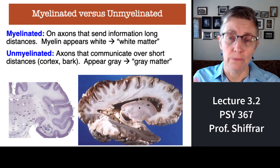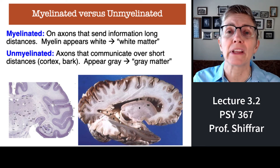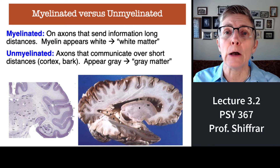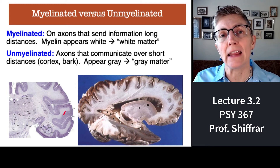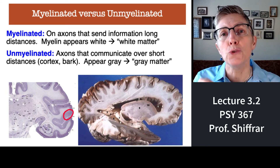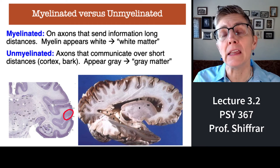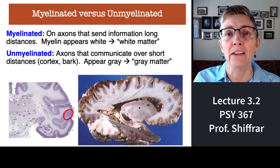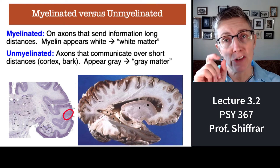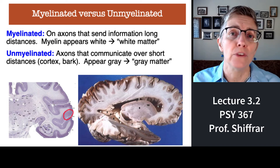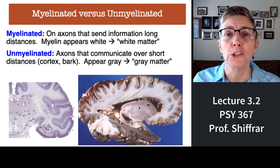When you look at this brain — the picture you're seeing now — regions that are gray are regions where there isn't myelin. Maybe it's a cell body, or maybe you're looking at neurons that only have to transmit information a short distance, and so they don't need the myelin to speed up transmission rates.